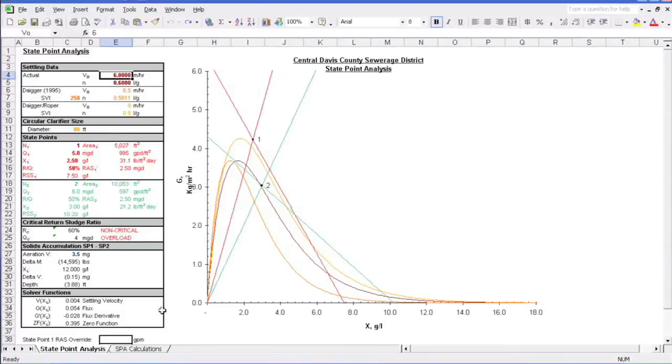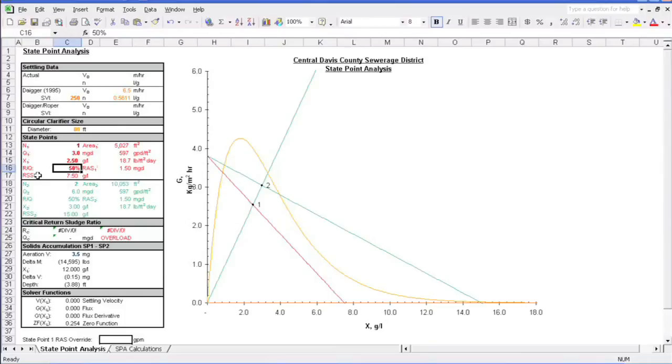This is one version of an interactive state point diagram that can be used as a tool in clarifier operation. As you can see, this model has three methods for developing settling curves. The first is based on actual measured clarifier characteristics. The second is an approximation developed by Dr. Glenn Diger. The third is a modification on the Diger model called the Diger Roper. Let's simplify things and clear some values out of the other models and use just the Diger model only. The Diger model allows you to construct an approximate settling curve based on the SVI. We're going to assume that we have some decent settling sludge here, coming in with an SVI of 250. Let's make the clarifier diameter 80 feet and specify that only one is in service. For this scenario, let's have everything going smoothly with an influent flow of 3 MGD, a RAS of 50% of the influent flow, and a mixed liquor concentration of 2500 milligrams per liter, or 2.5 grams per liter.